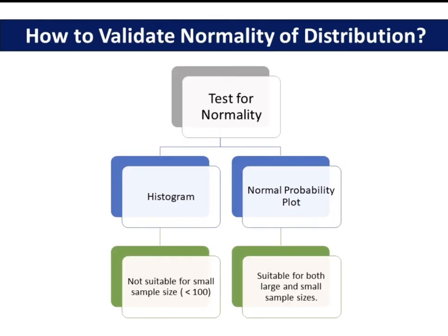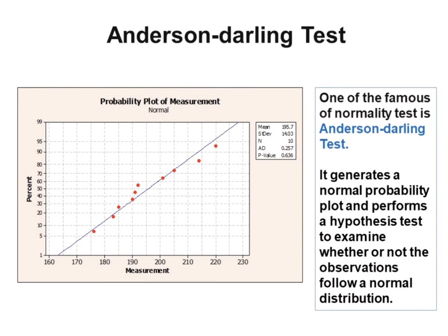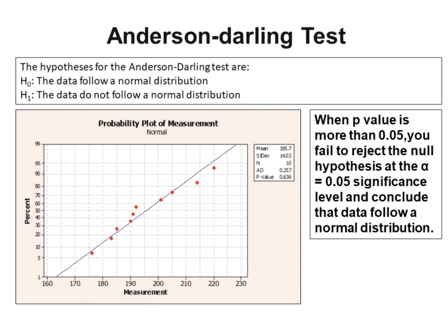There are two methods of determining the normality of the distribution, which are histogram and normal probability plot. Histogram is not suitable for small sample size, which is less than 100. In contrast, normal probability plot is suitable for both large and small sample sizes. A normal probability plot is a graphical method for determining whether or not the observations follow a normal distribution. One of the famous normality tests is the Anderson-Darling test. It generates a normal probability plot and performs a hypothesis test to examine whether or not the observations follow a normal distribution. When p-value is more than 0.05, you fail to reject the null hypothesis at the alpha equals 0.05 significance level and conclude that data follow a normal distribution.